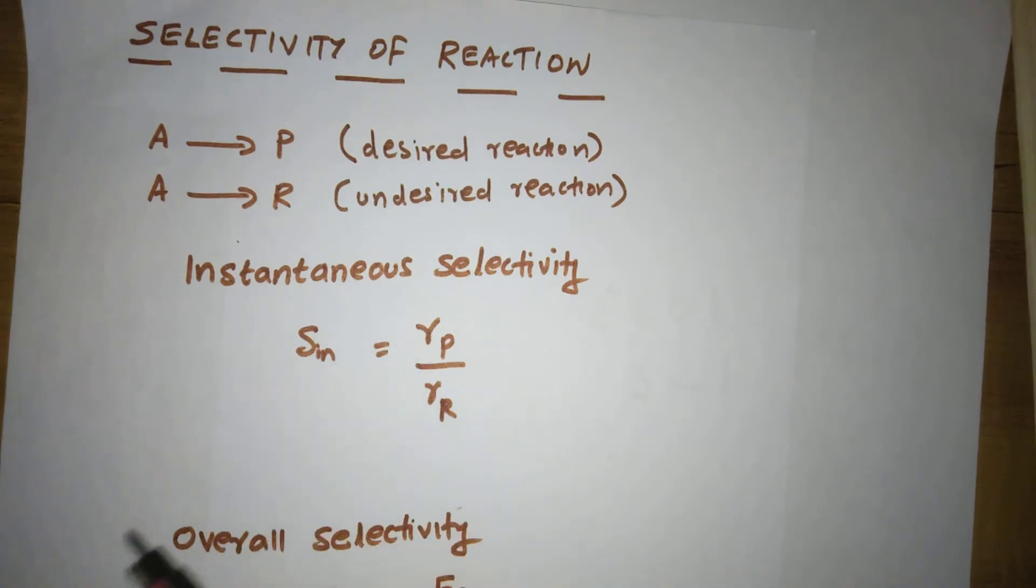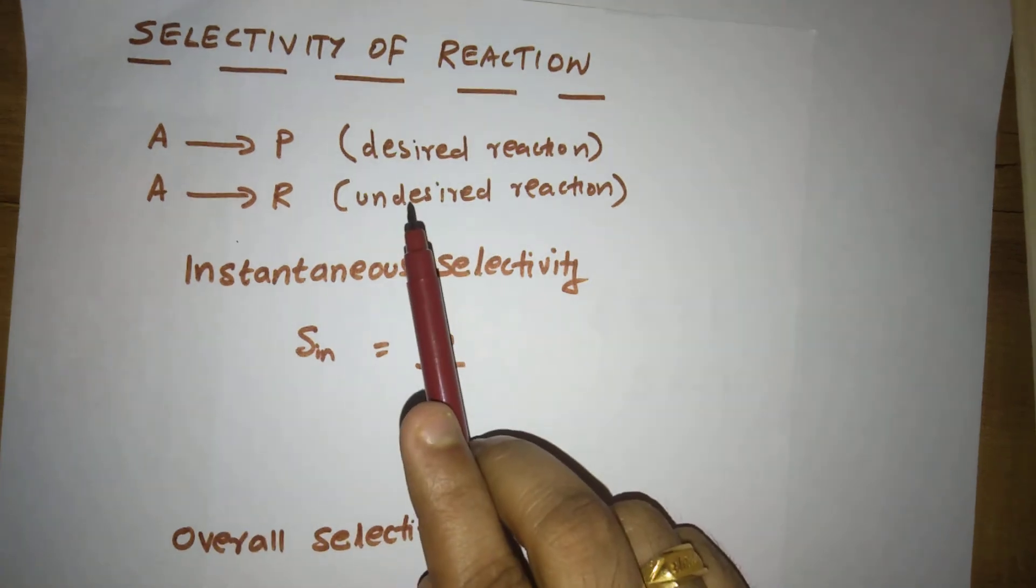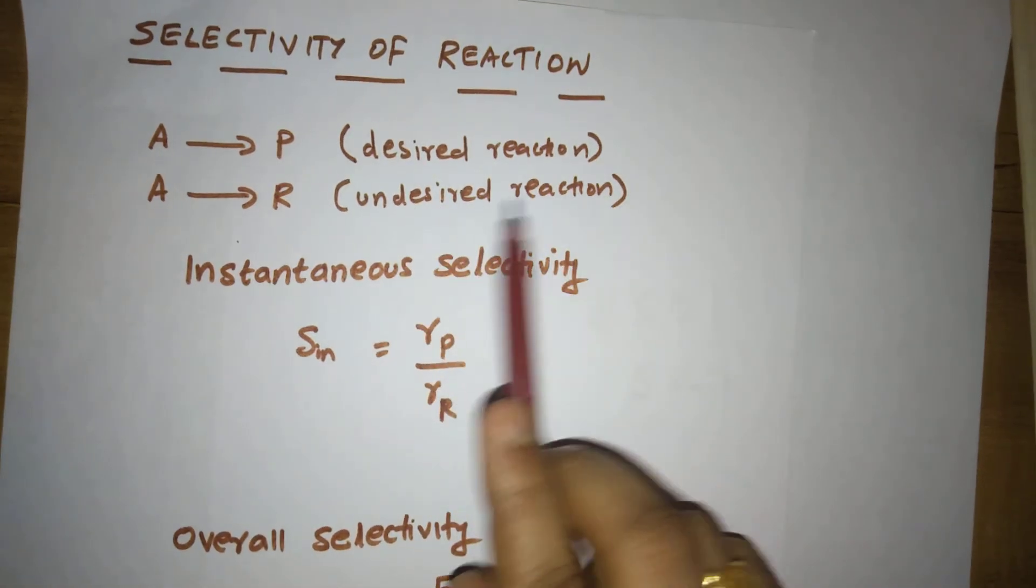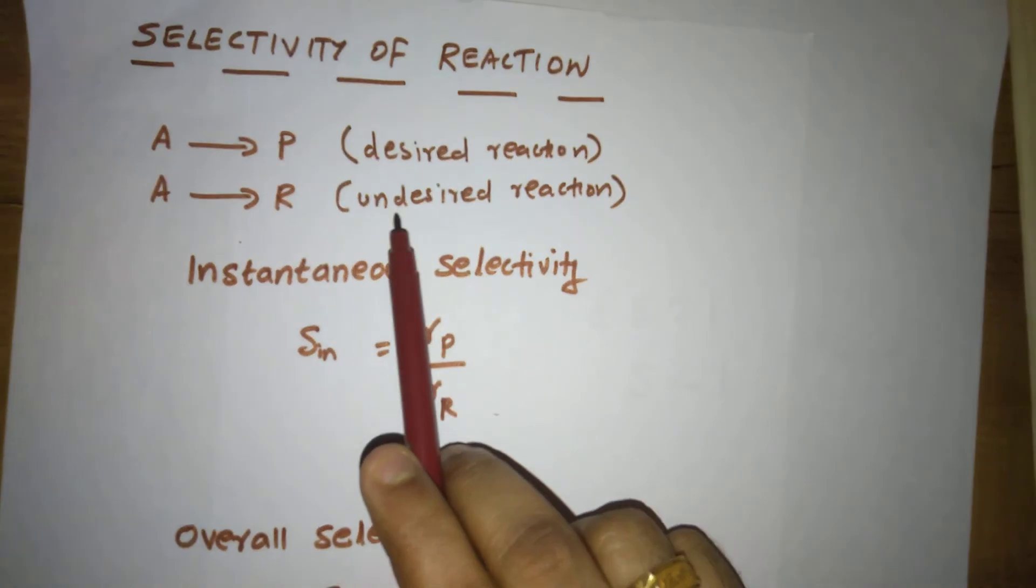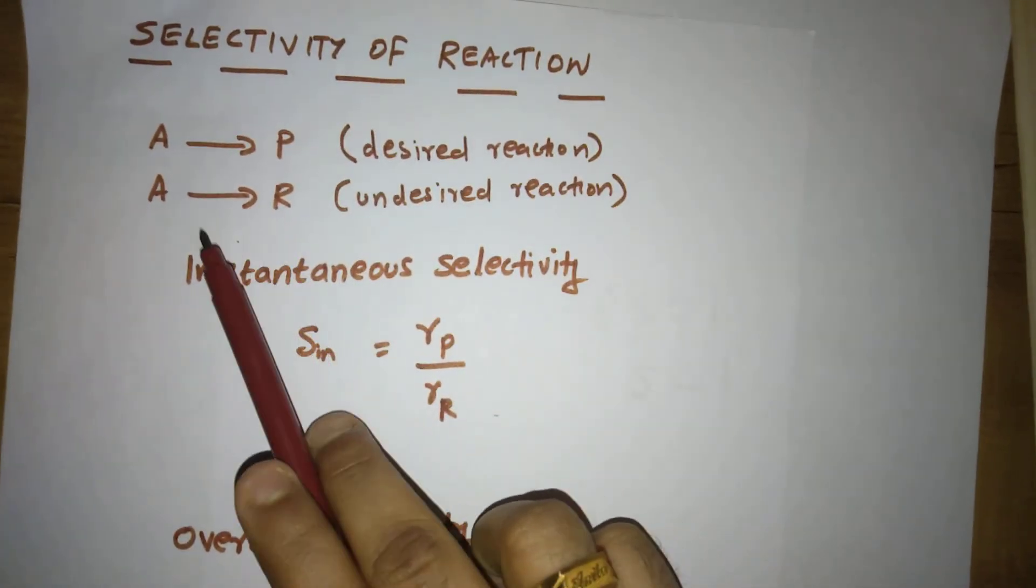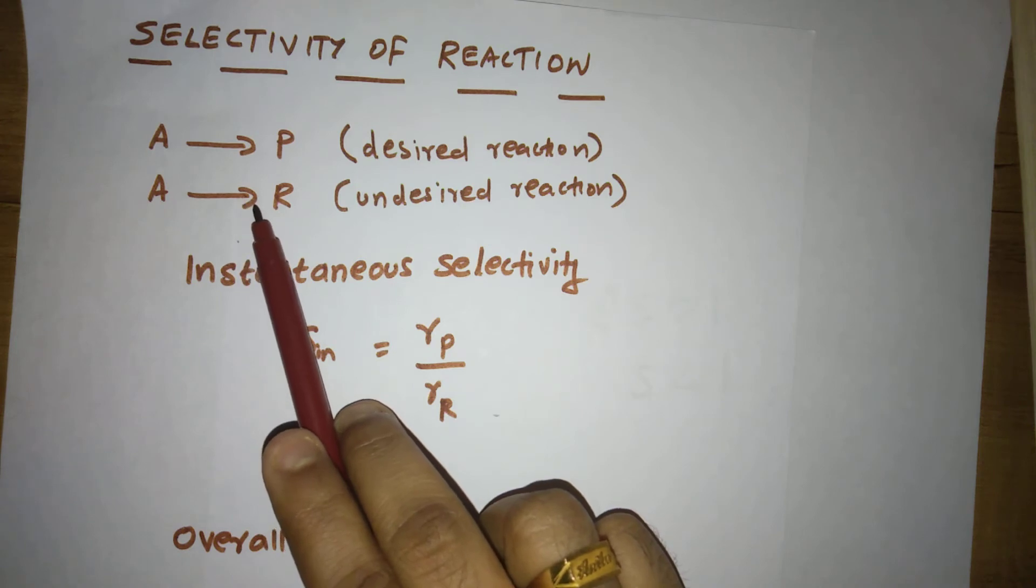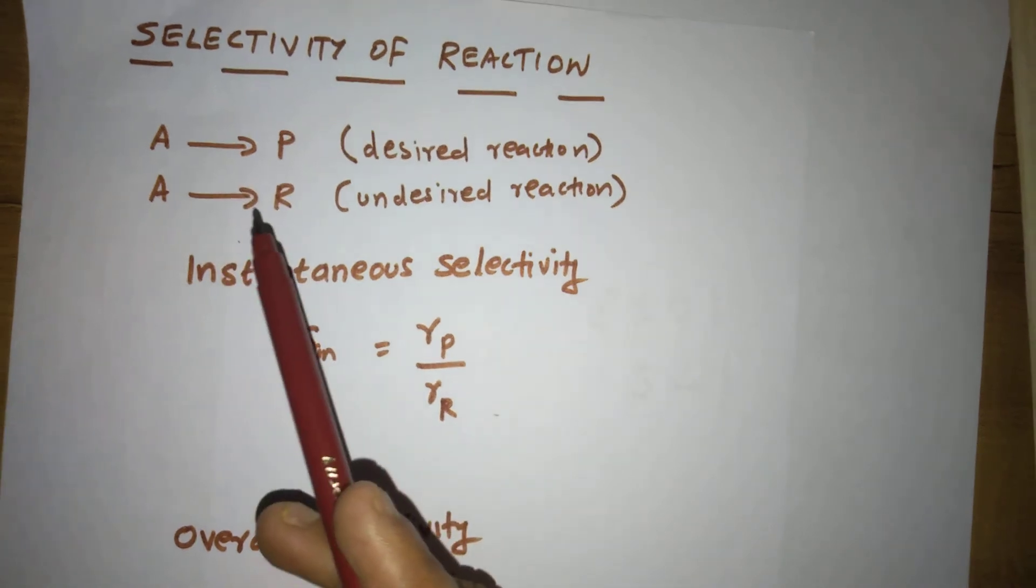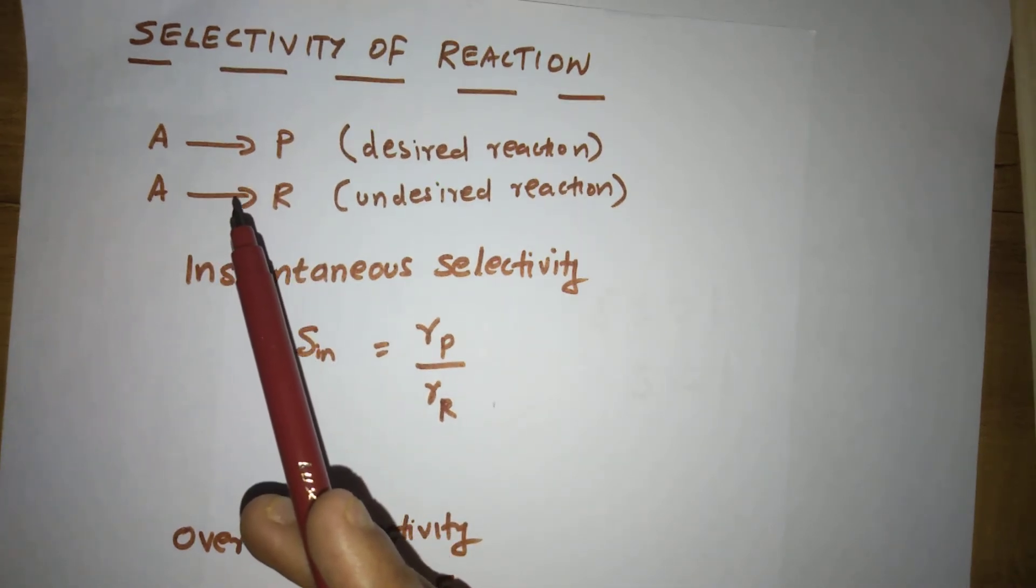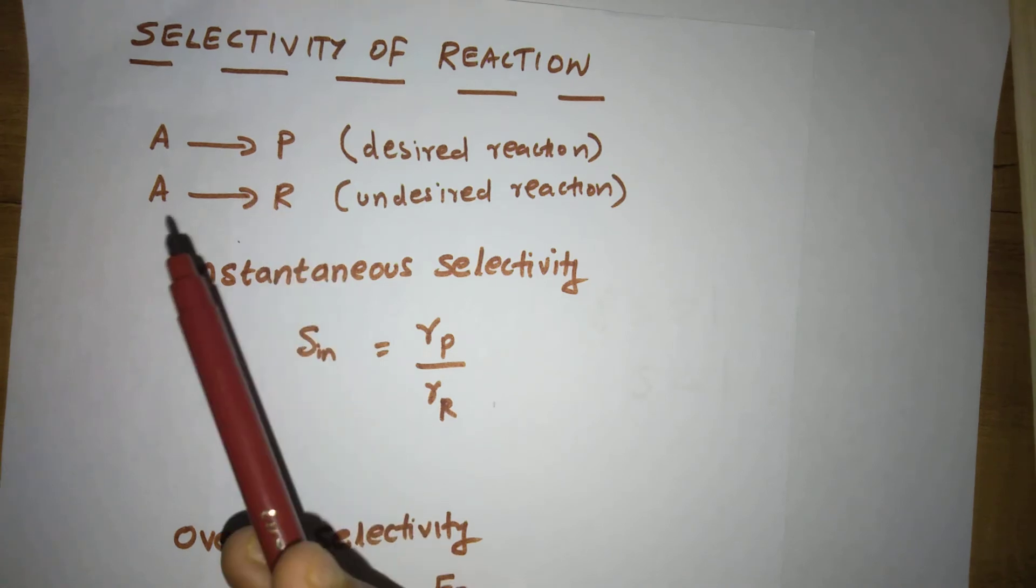In such a situation, to increase selectivity, we can use inhibitors or negative catalysts for this particular reaction, A gives R. For this reaction, we can use inhibitors or negative catalysts. The negative catalyst helps to reduce the speed or rate of a reaction.